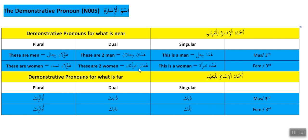'Hatani imra'atani' — these are two women. Note that the alif here is really called hamzatul-wasil. We would not pronounce the hamza when joining words, so we say 'hatani-imra'atani.' The plural is 'haulai nisa'un' — these are women. You'll notice that 'haulai' is the same for both male and female plural.